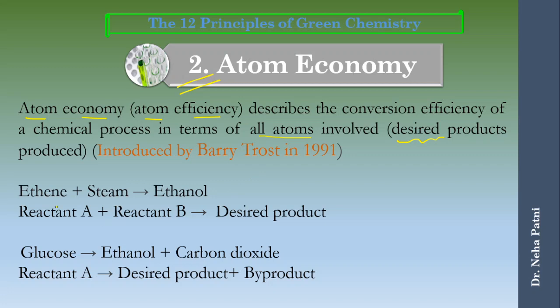For example, if reactant A and B react together, let's say ethene and steam react together they form ethanol. This is what atom economy says - the desired product is made. But imagine if this kind of reaction is there where you have glucose converting to ethanol but you have a byproduct also - CO2 is released here as a byproduct.